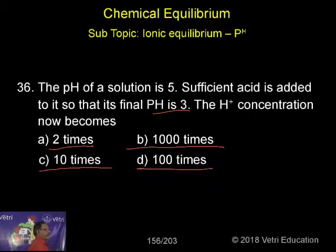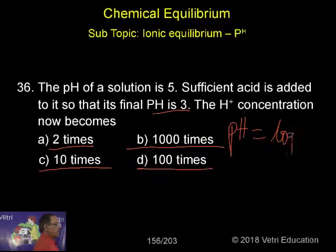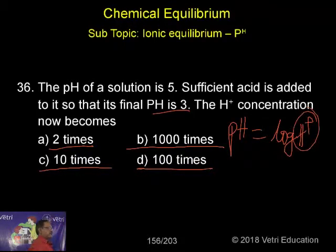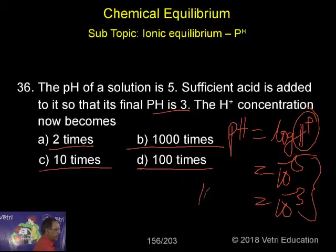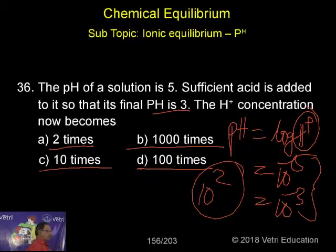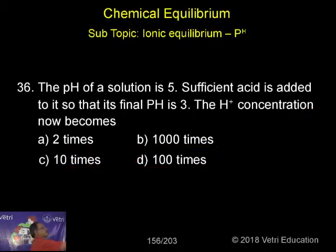As usual, we know already that pH means minus log [H⁺]. The first case we write as 10 to the power of minus 5, and the second case as 10 to the power of minus 3. The difference is 10 to the power of 2, which means it should be 100 times.